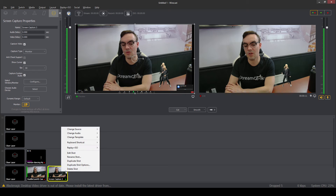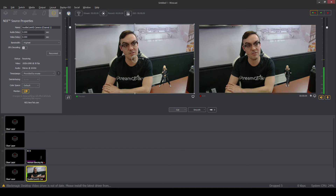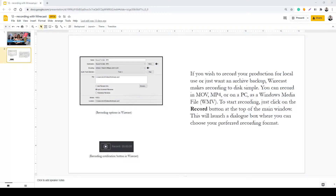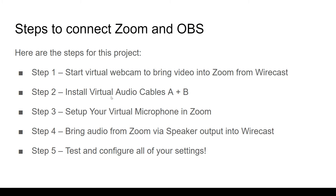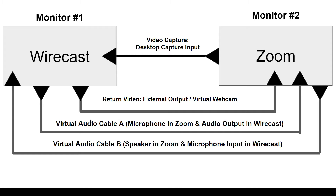Let's go back to the step-by-step process. We need some virtual audio cables. We did the easy stuff — the virtual webcam into Zoom and capturing Zoom with a desktop capture. The audio is not that hard once you set it up. We need either one or two virtual audio cables depending on how you want to set this up. Wirecast gives you one virtual microphone, which is great, but you still need a second virtual audio cable.